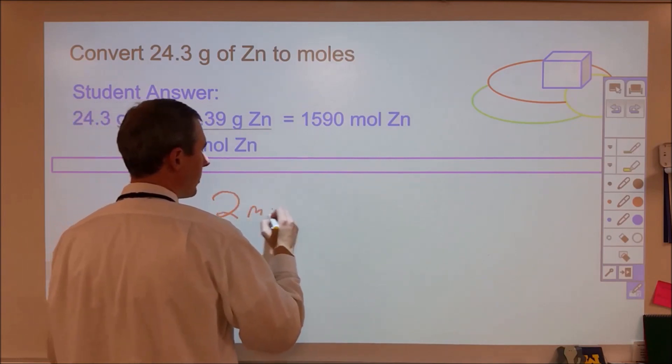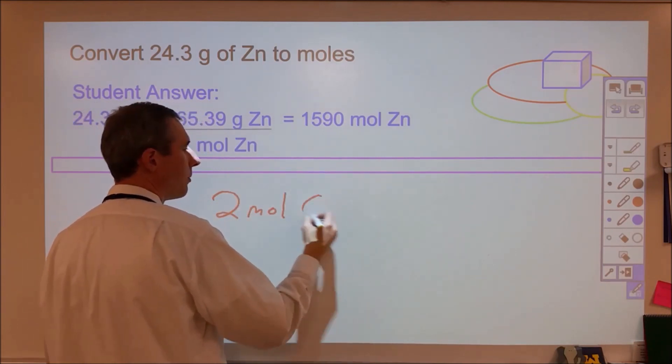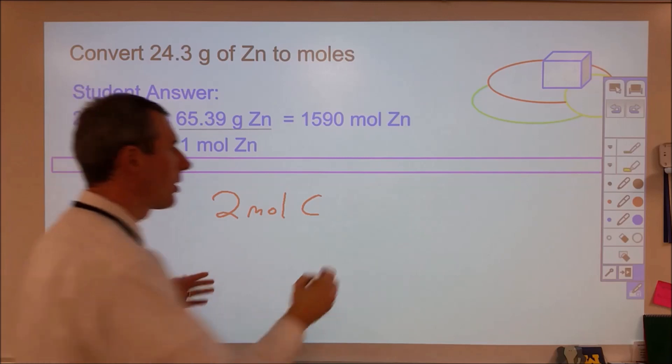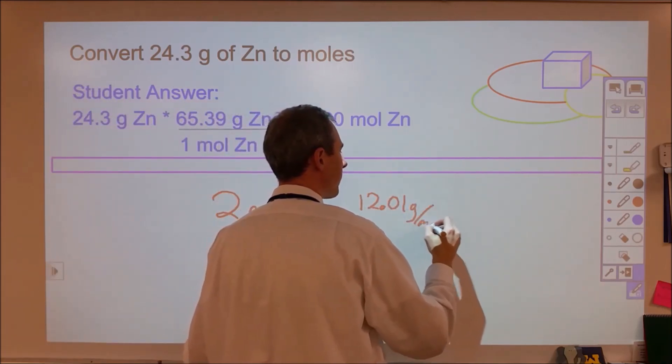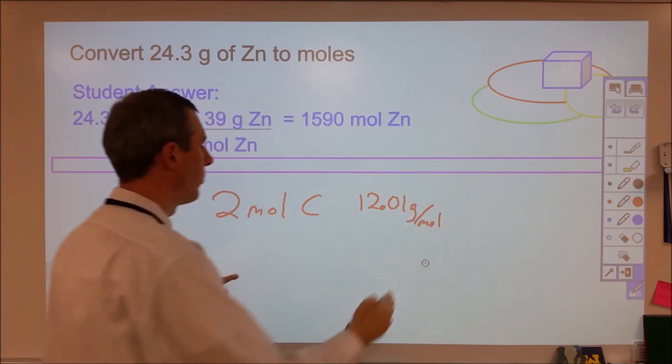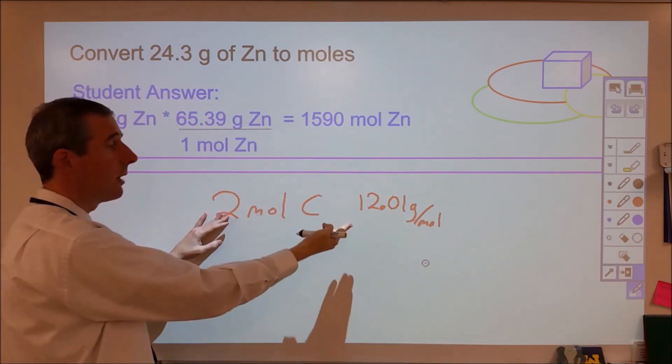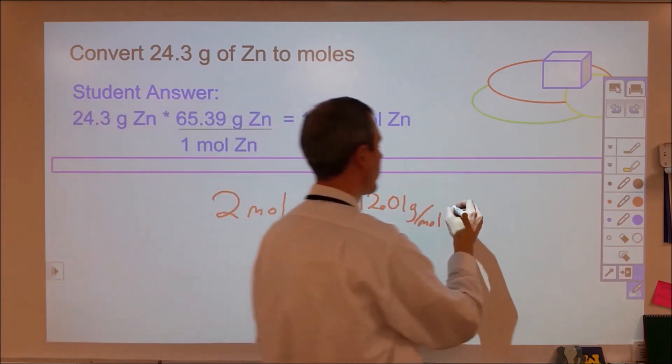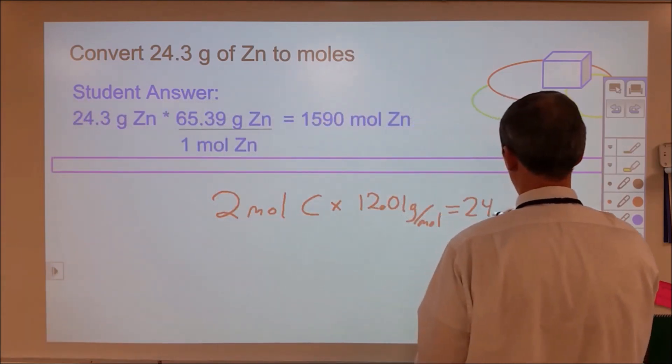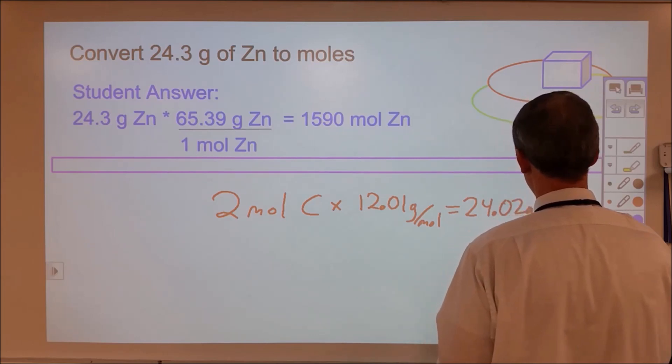now I have two moles of some other substance. Let's say I have two moles of carbon. I know carbon is 12.01 grams per mole, that means if I had 12 grams, I would have one mole. Well, I have two moles. So now I should have double that amount. And so now I'm going to multiply to go from moles to grams.